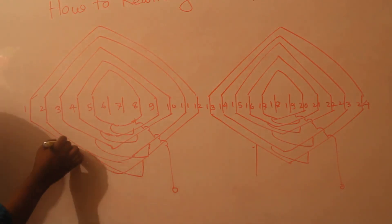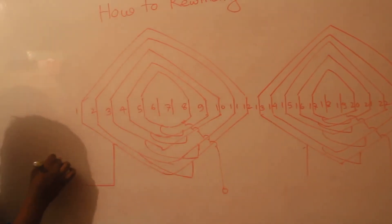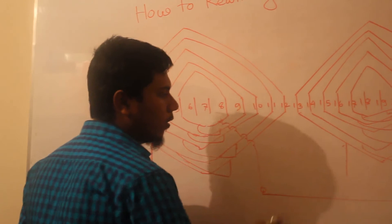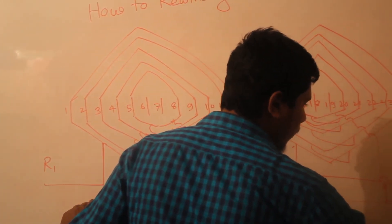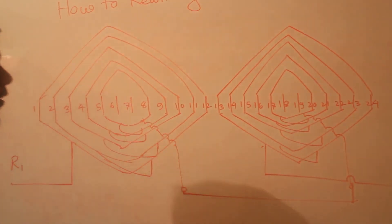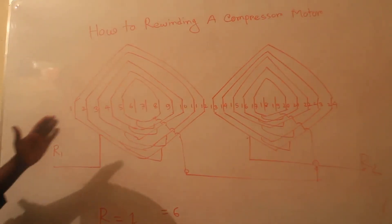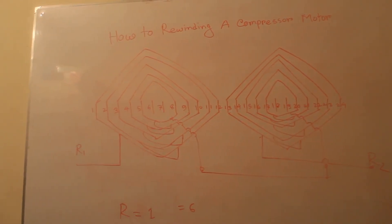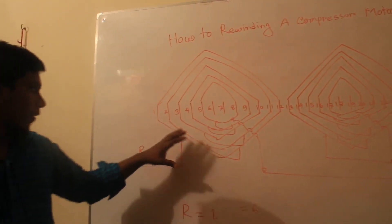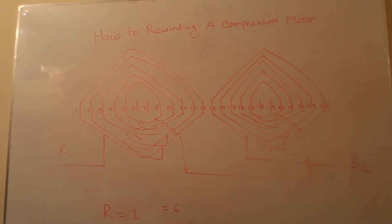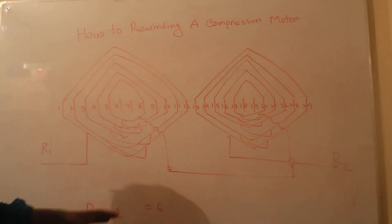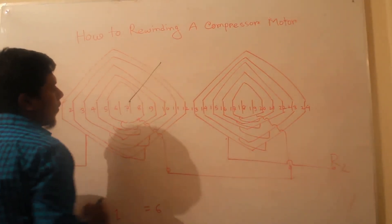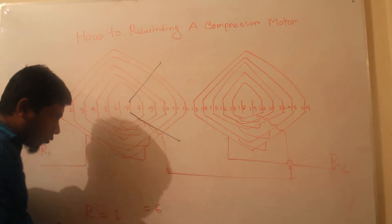We connect here: this first terminal is terminal R1 — this is Running 1. The first full's last terminal is connected to the second full's last terminal. The second full's first terminal is the Running coil R2 terminal. This completes the running coil. Here the total is 10 coils making this running coil, with each full made by 5 coils.